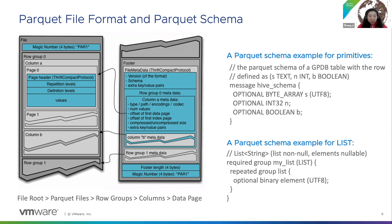Here are two examples of Parquet schema. The top one is the Parquet schema for primitive types — text, int, and boolean. Primitive schemas are just one-line schemas. The bottom one is a Parquet schema for a list of string type. List schema is in a nested structure.